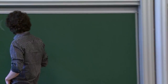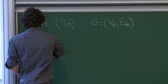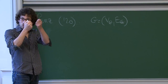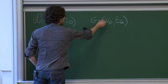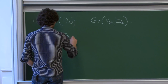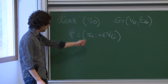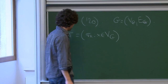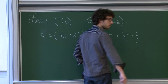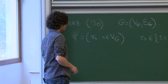On se donne un graphe G. Pour chaque sommet x, on place une variable σ_x qui prend la valeur +1 ou −1 : soit il pointe vers le nord, soit vers le sud.